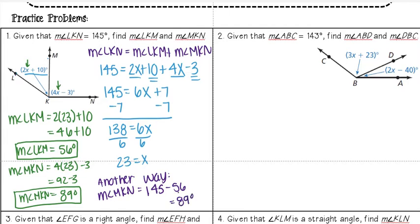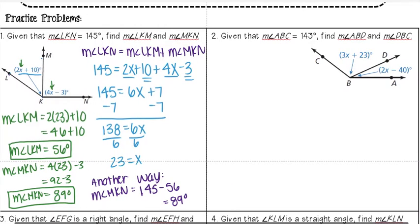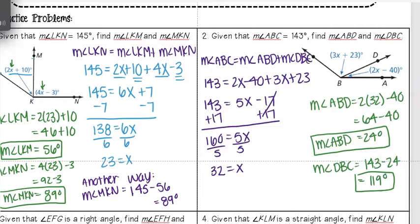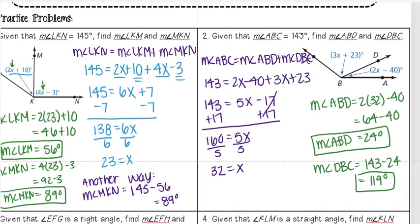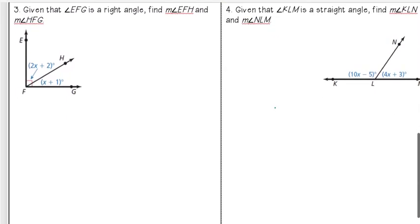So you can do it either way, whatever makes most sense to you. Go ahead and pause the video and try that next one on your own. Okay, this is the answer you should have gotten for number two. You should have gotten that the measure of angle ABD was 24 degrees and DBC is 119. This was really similar to what we did in problem one.